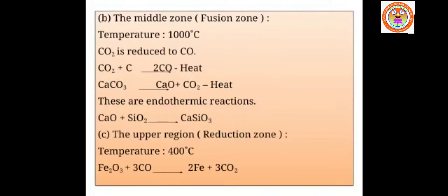In the middle zone, carbon dioxide is reduced to carbon monoxide, and calcium carbonate is converted to calcium oxide and carbon dioxide — both endothermic reactions. The calcium oxide formed by decomposition of calcium carbonate then reacts with silica (SiO₂) to form the slag, calcium silicate (CaSiO₃). This slag is not needed and is removed.